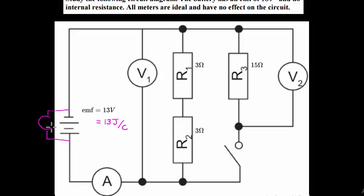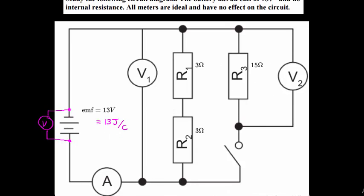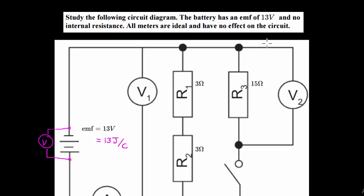In other words, if we measure the voltage across the two ends of the battery, that is what we call the EMF — the potential difference over those two points. This diagram also tells us there is no internal resistance. Internal resistance would mean there is resistance in the battery itself, as well as in the wires, that would cause a different reading on the voltmeter.